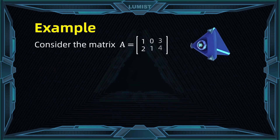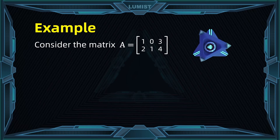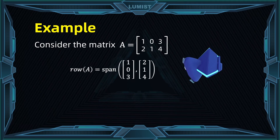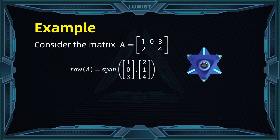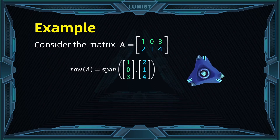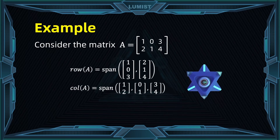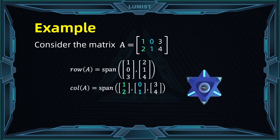For a quick example, look at the following. Here we have a 2 by 3 matrix. If we take its row space, it would simply be the subspace spanned by the vectors [1, 0, 3] and [2, 1, 4], the rows of A. As for the column space, the same logic applies and it would be the subspace spanned by the vectors [1, 2], [0, 1], and [3, 4].